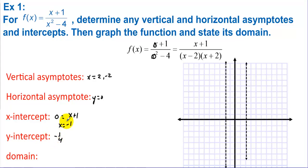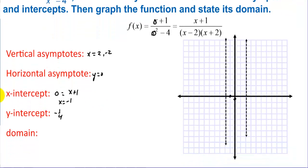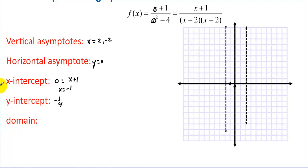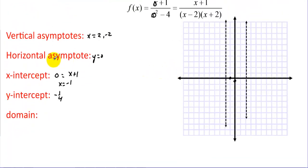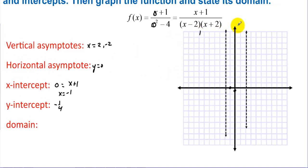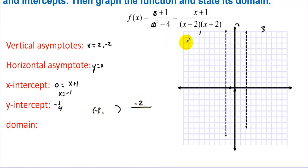We plot the x-intercept at (-1, 0) and the y-intercept at (0, -1/4). To fill in the three regions of the graph, we test a point. For x = -3 in region one, we get (-3 + 1) / ((-3)² - 4) = -2 / 5, so the point is (-3, -2/5). The graph will hug the asymptotes.